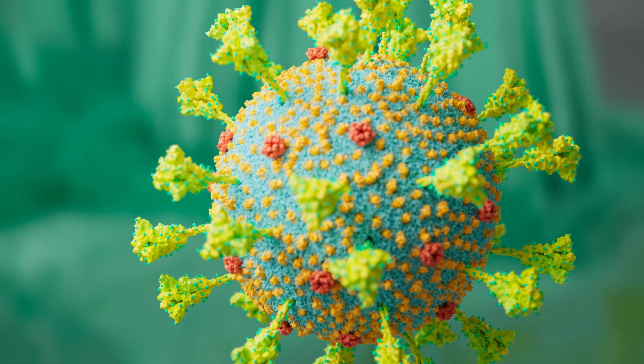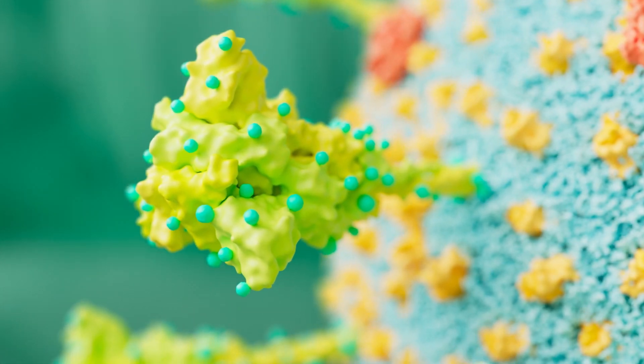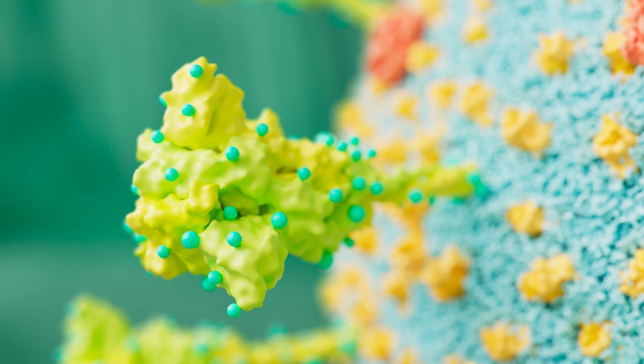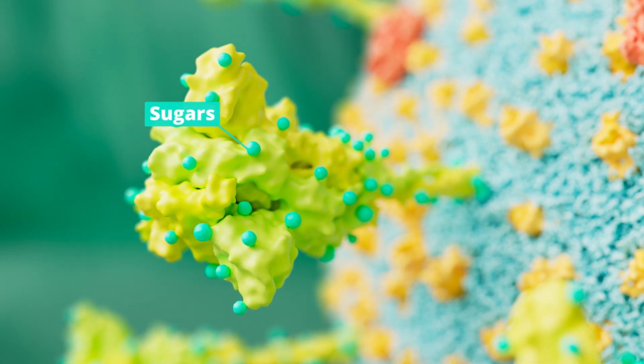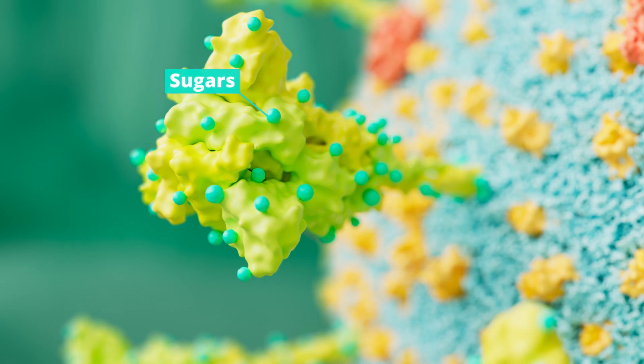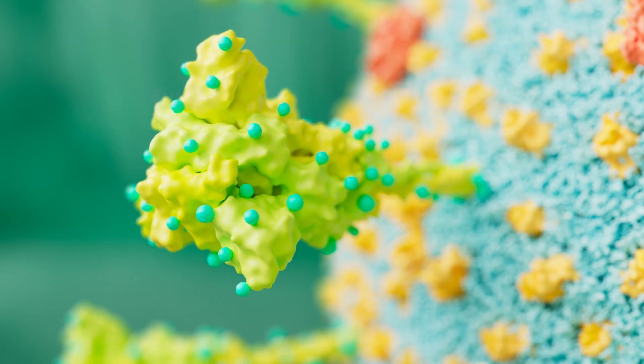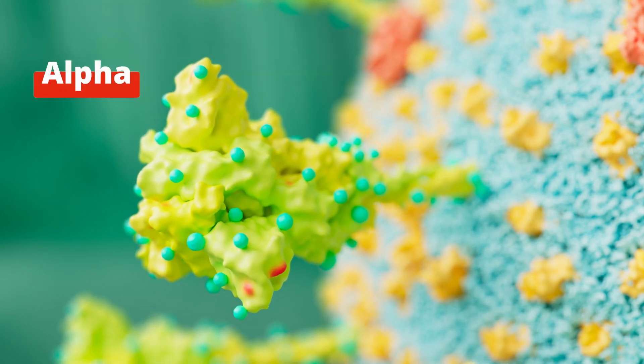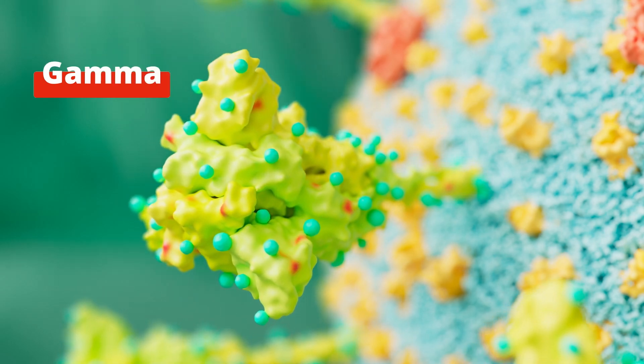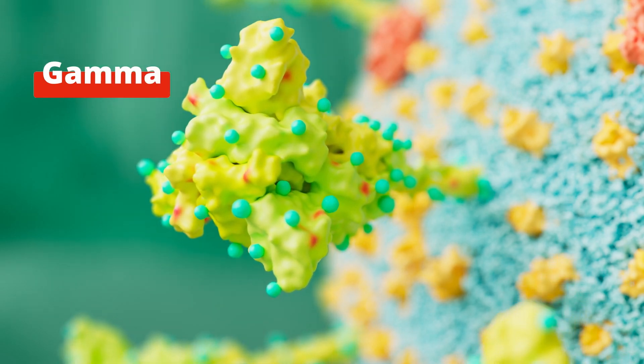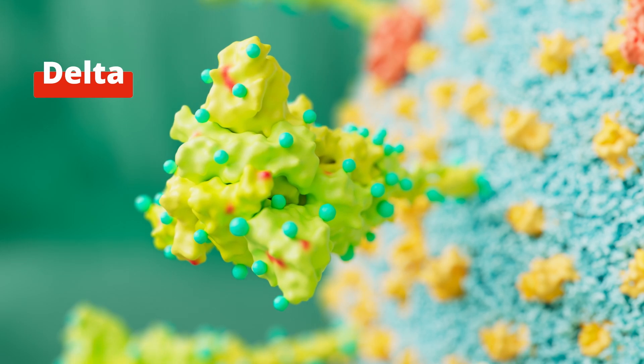The spike protein is responsible for making contact with the host cell and starting the infection. It has a coat of sugars that hides it from the body's immune system. Many of the variants of SARS-CoV-2 are characterised by mutations on this spike protein, seen here in red. These mutations can influence its function, some making the virus more infectious.